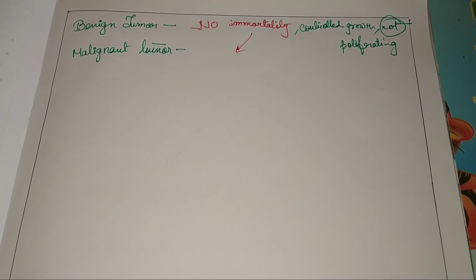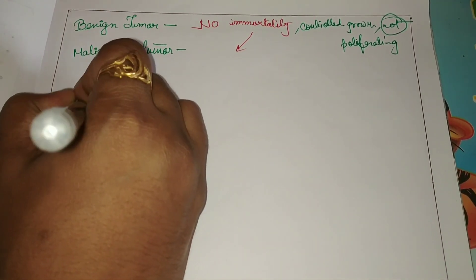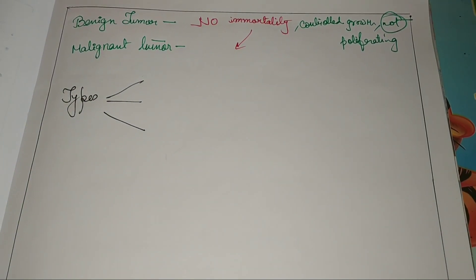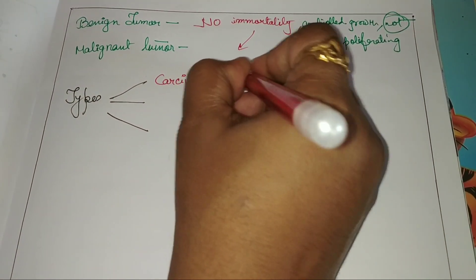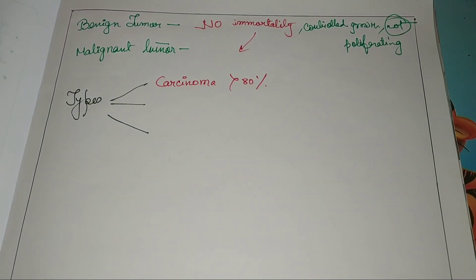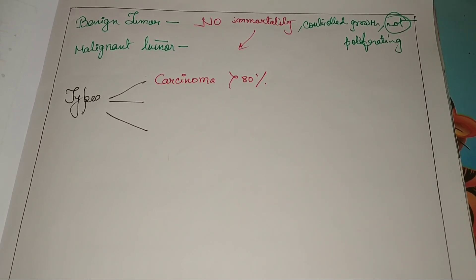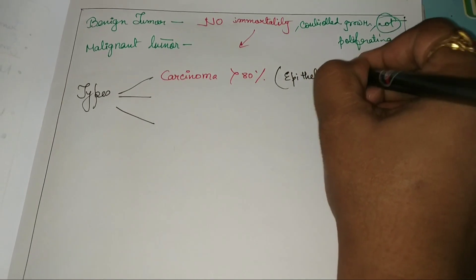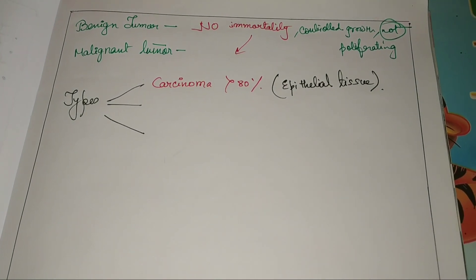Now let's talk about the types of tumor. There are three types. First is carcinoma — about 80% of cases are carcinoma. This means cancer occurs in the epithelial tissue, such as the skin, liver, and prostate — the epithelial lining of our body.